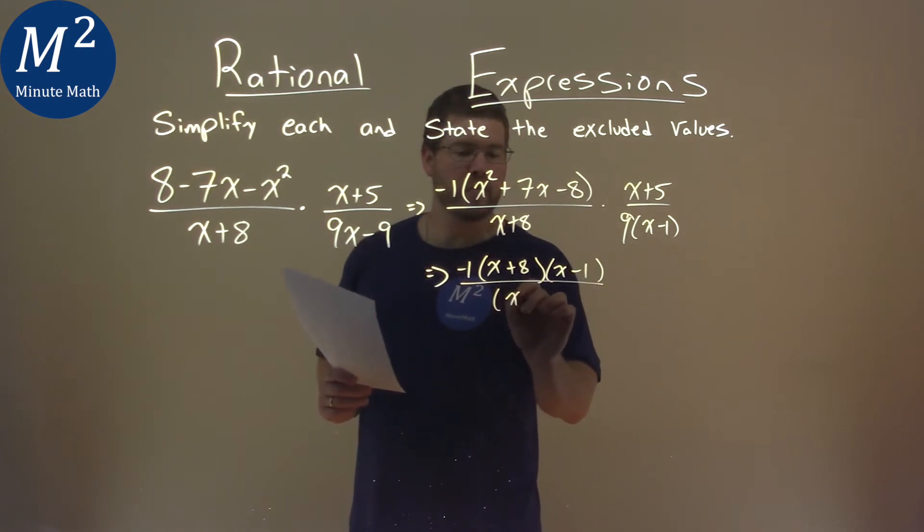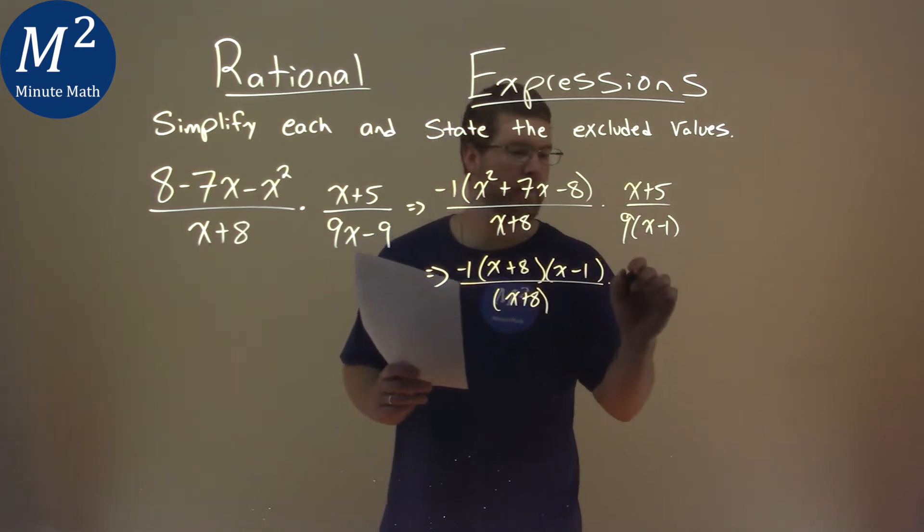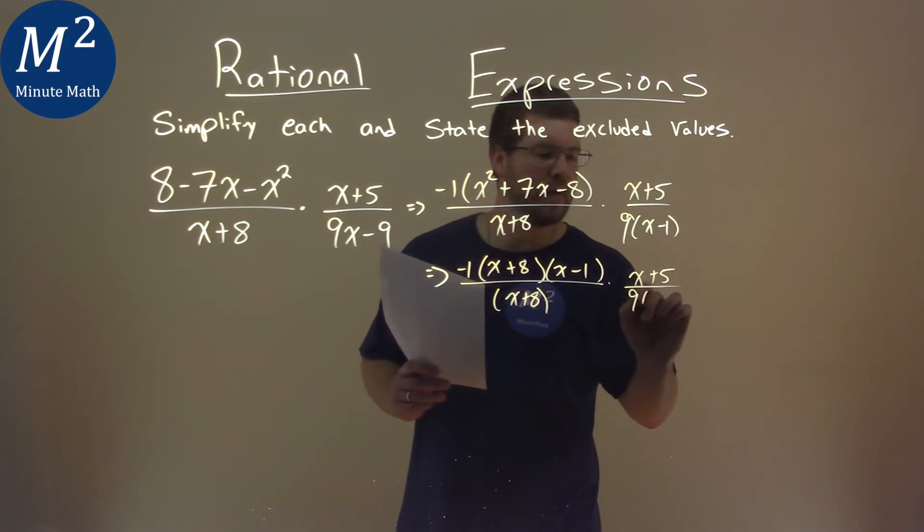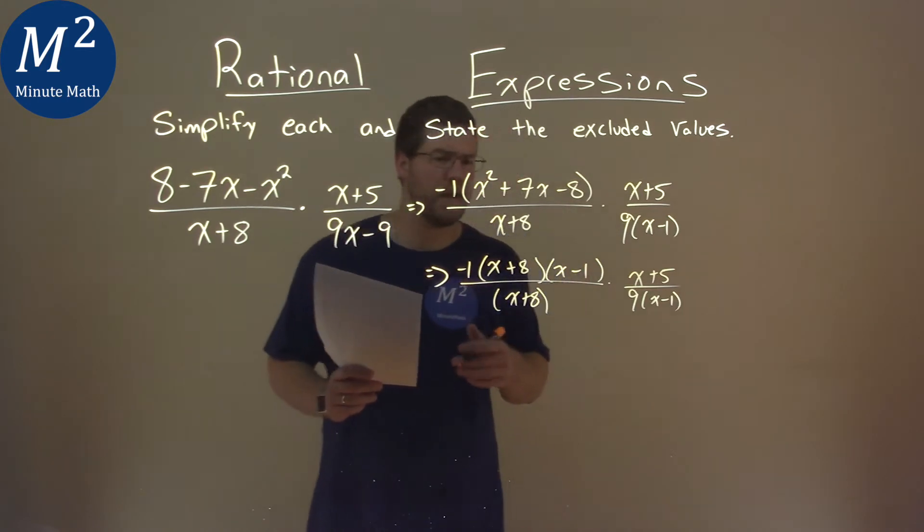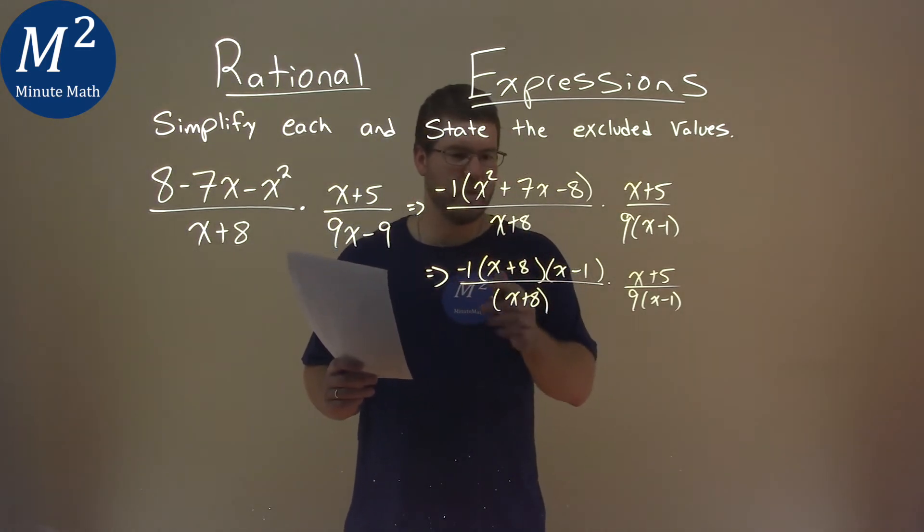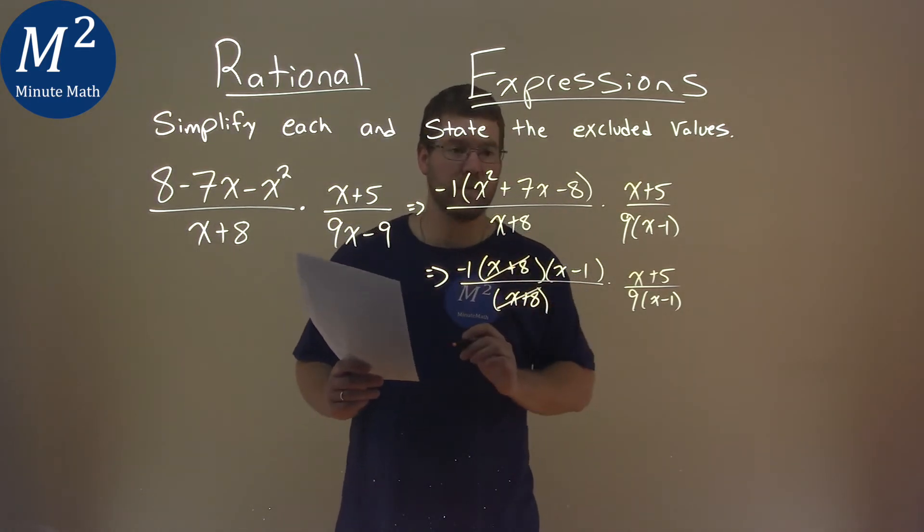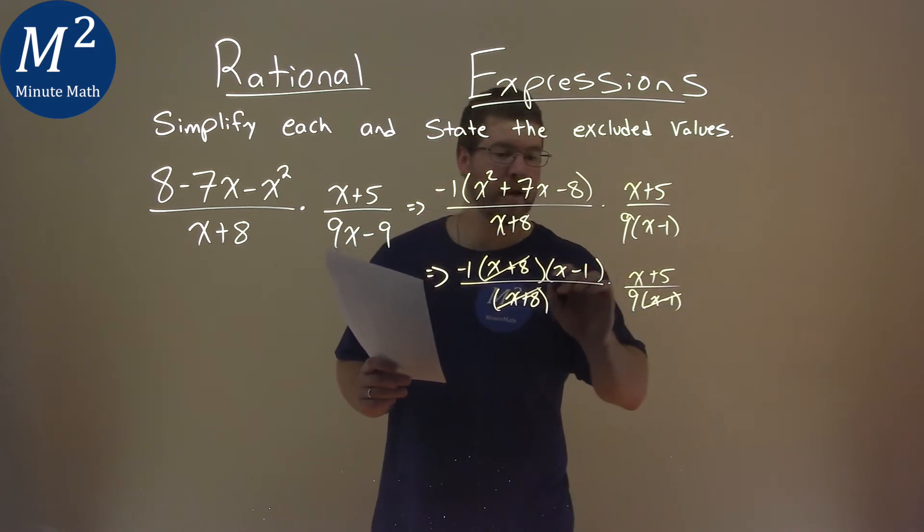All over the x plus 8 here, and we bring down the other parts, x plus 5 over a 9x minus 1. Now we can cancel out where we can. We have an x plus 8 here and an x plus 8 there, an x minus 1 and an x minus 1.